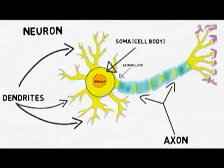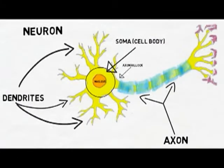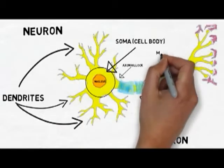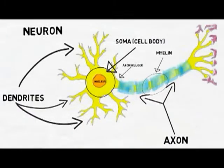At this point, the signal is called an action potential. The action potential travels down the axon, which is covered with myelin, an insulatory material that helps to prevent the signal from degrading.